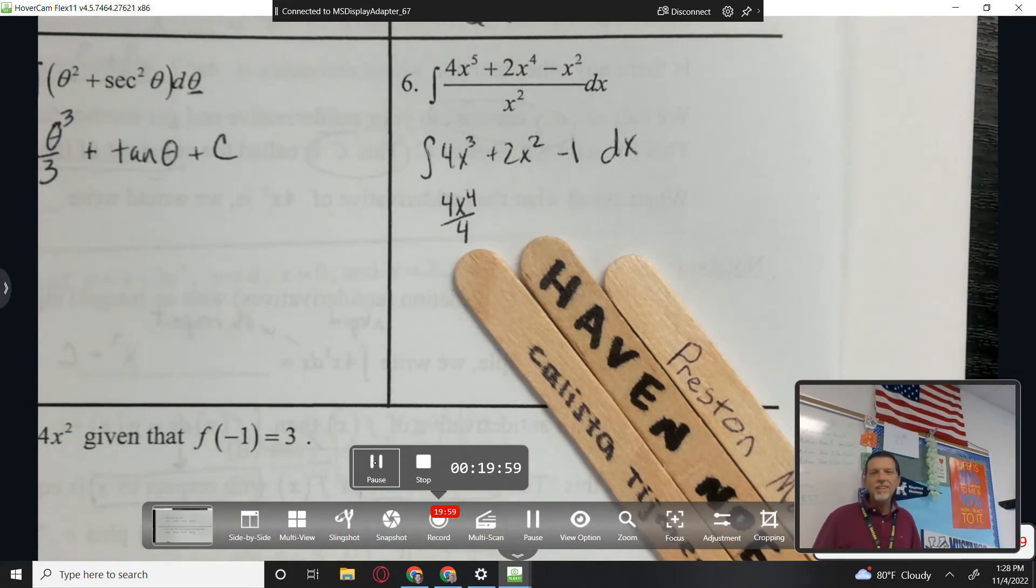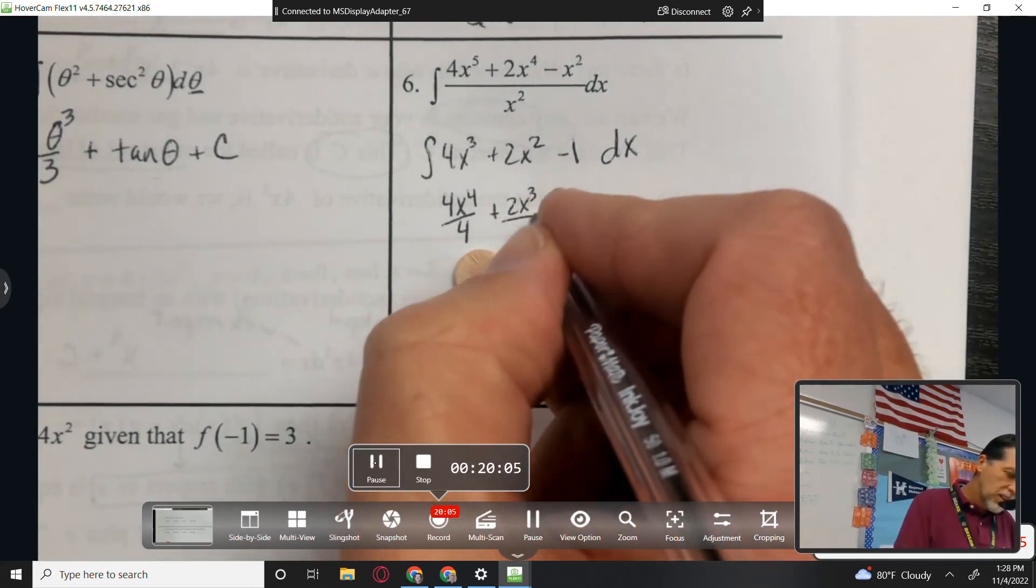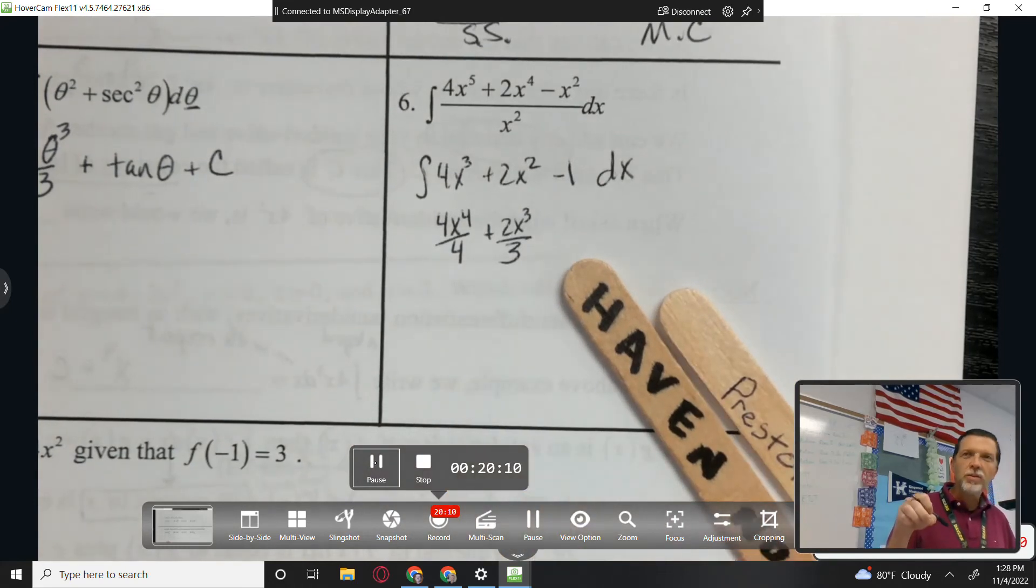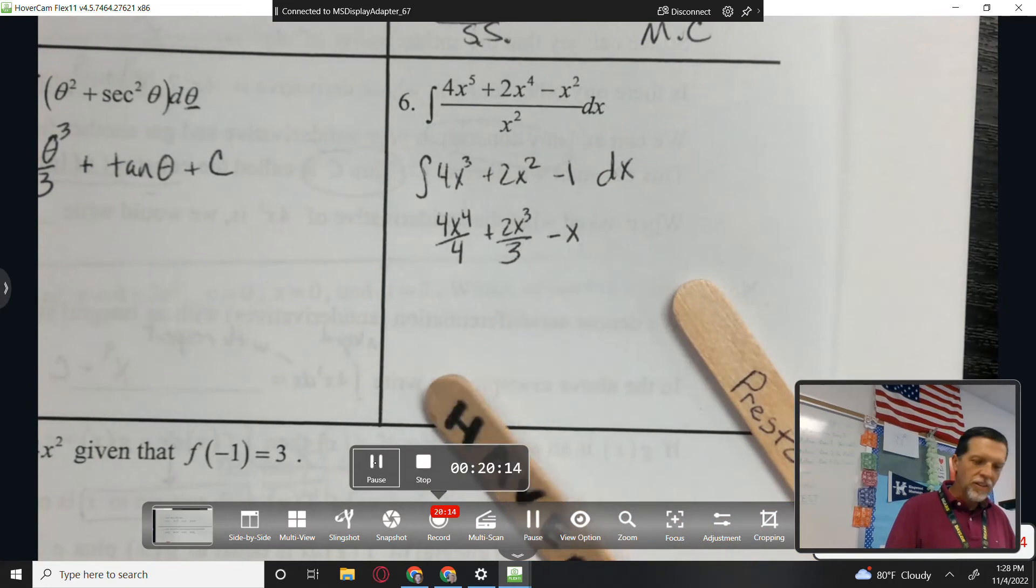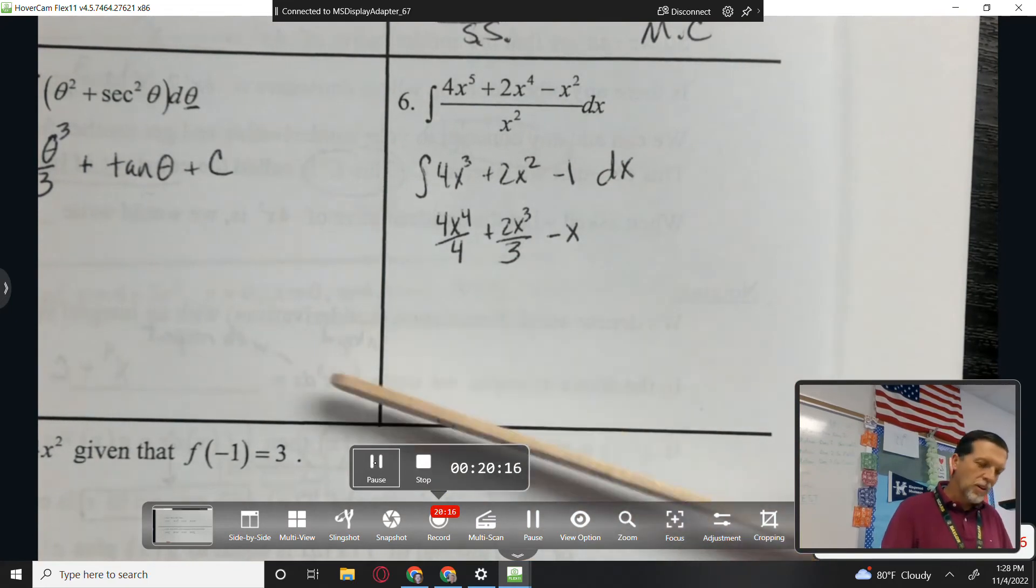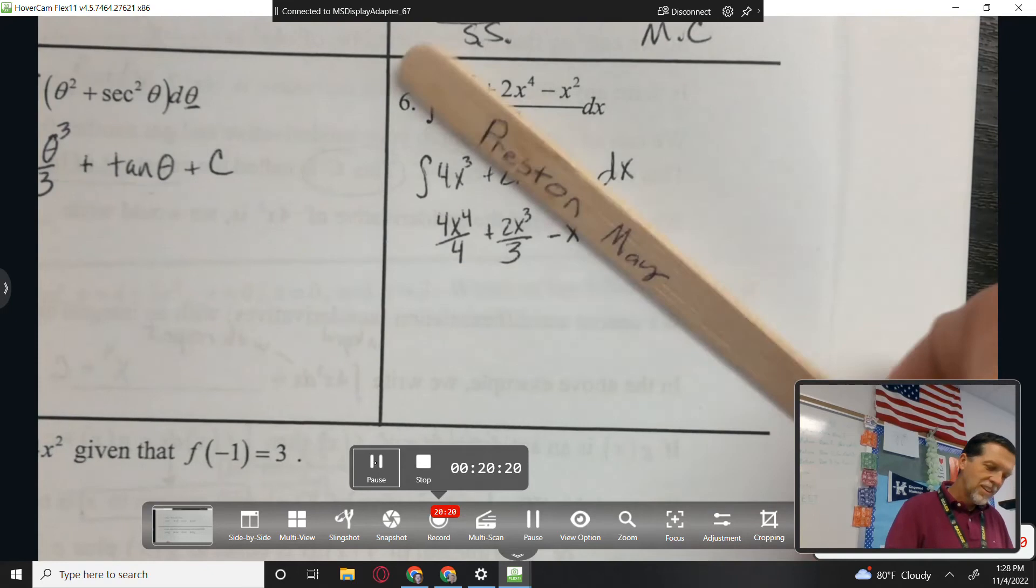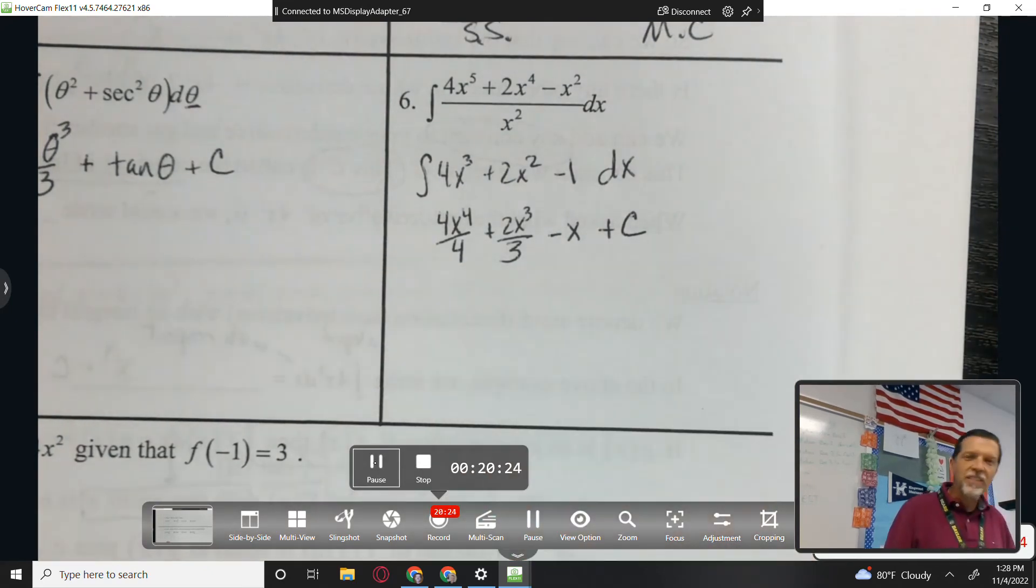Calista, how about the antiderivative of 2x squared? 2x cubed over 3. Very nice. Haven, the antiderivative of minus 1? Negative x. Good. Preston, why do I have an extra popsicle stick up here? Because you had to add in the plus c. Of course. We'll just leave that alone and safe stop that and be done with it.